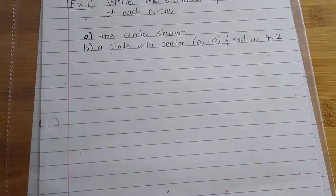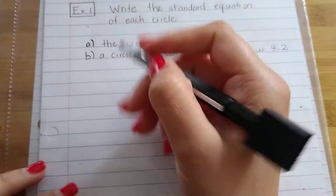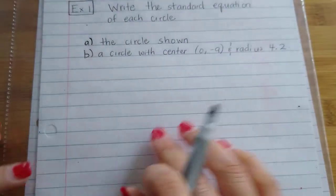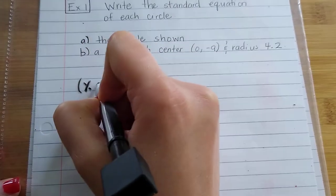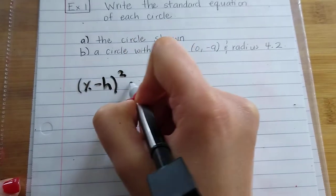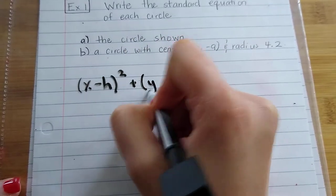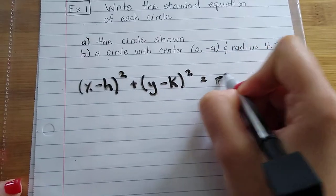So again, it's asking us to write the standard equation of a circle. I'm going to write the standard form here. So remember, it's (x - h)² + (y - k)² = r².